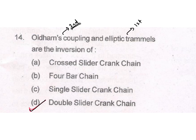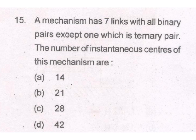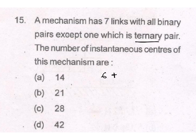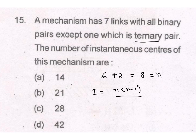A mechanism has seven links with all binary pairs except one, which is a ternary pair. We need to find the number of instantaneous centers. First, convert the ternary pair to binary pairs: one ternary pair is equivalent to two binary pairs. So six links with binary pairs plus one ternary pair (equivalent to two links) gives total N equal to 8. Instantaneous centers I equal to N(N−1)/2 = 8×7/2 = 28.